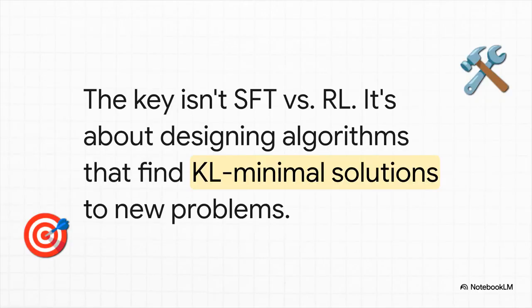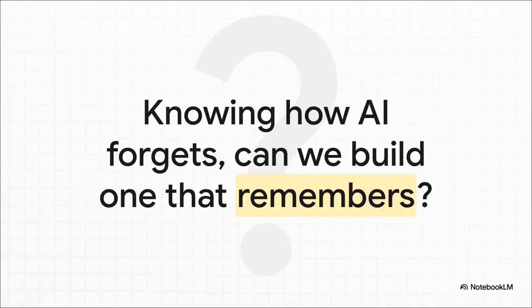So, the most important thing to take away from this isn't just that RL is better. That's not the point. The real insight here is a design principle for building better AI. If we want AI that can learn continuously without getting amnesia, we need to build algorithms that actively search for these KL-minimal solutions, the solutions that change the model as little as possible. What this research gives us is a brand new lens to look at this problem, and a powerful new law to guide us.